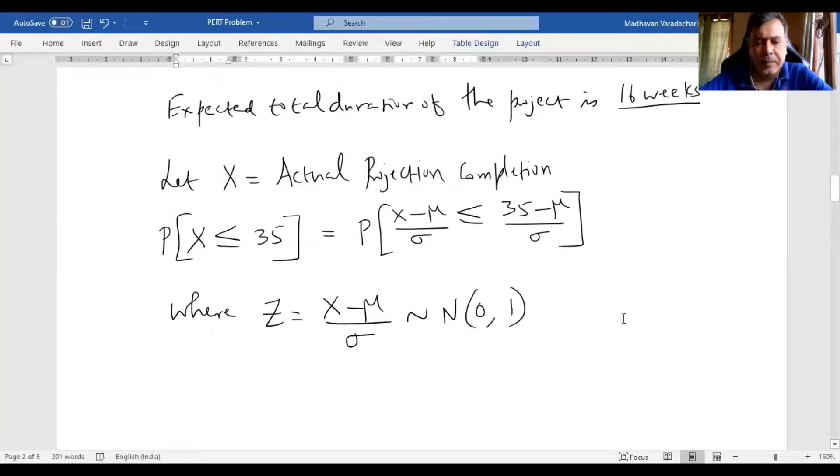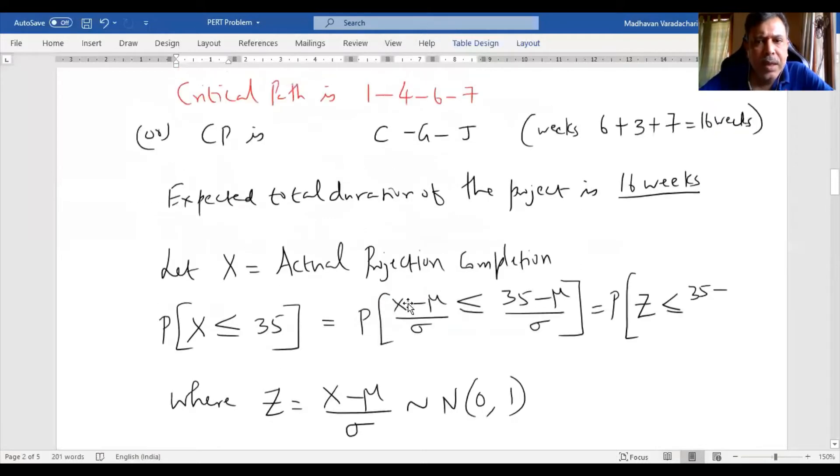We know X minus μ by σ is our Z. Now 35, what is μ? μ is nothing but the expected total duration. So it is 16.